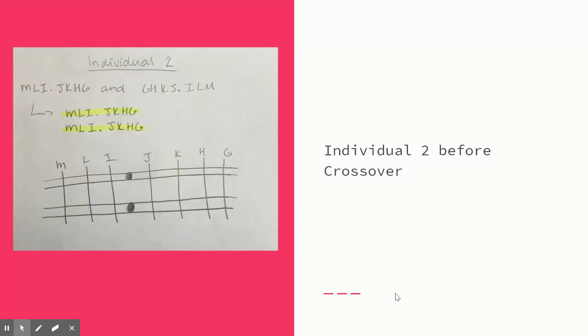This is individual two before the crossover. Following the same steps seen with individual one, we observe that these chromosomes are homozygous. Therefore, there will not be a loop.